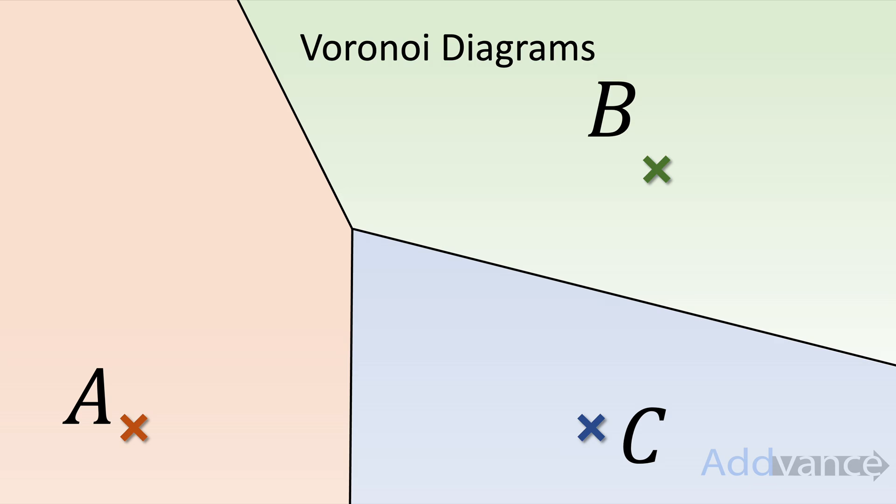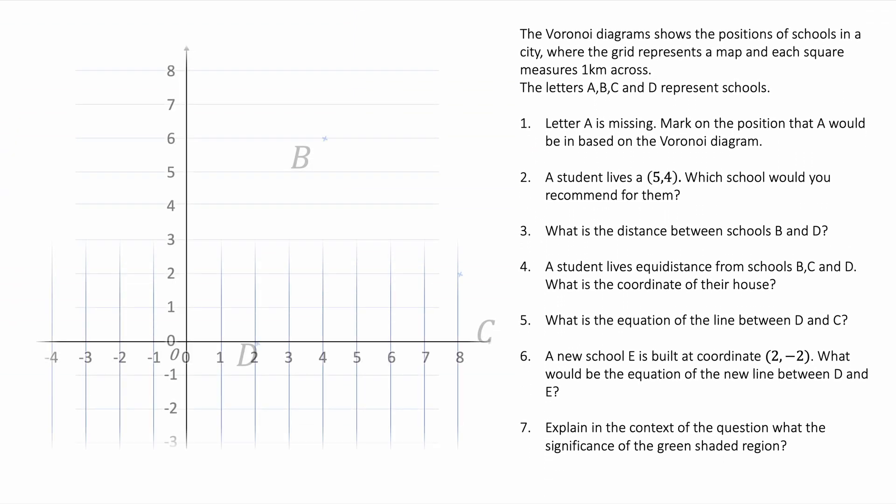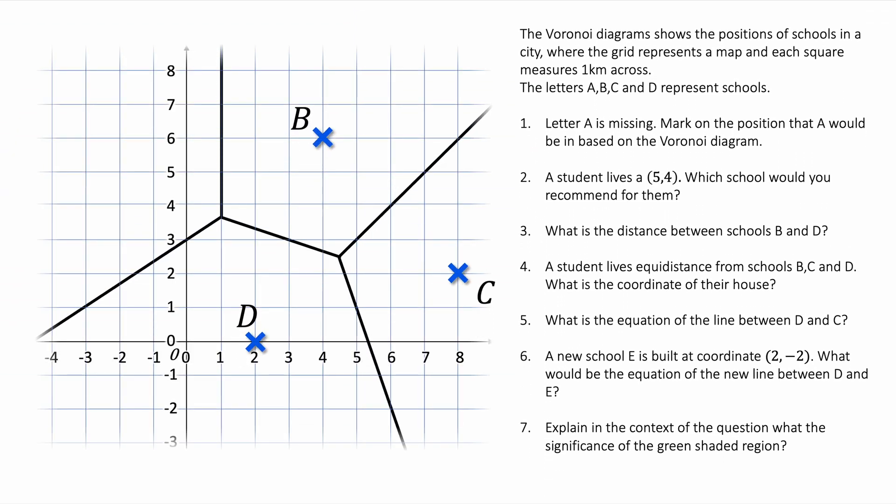Now we might have some exam questions to answer about Voronoi diagrams, and they're normally drawn on graphs with coordinates, so we'll have a look at one of those now. The Voronoi diagram shows the position of schools in a city where the grid represents a map and each square measures one kilometer across. A, B, C, and D represent schools. We've got seven questions to work through step by step.